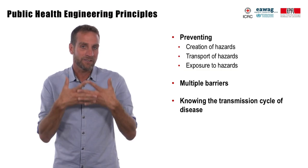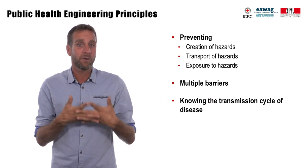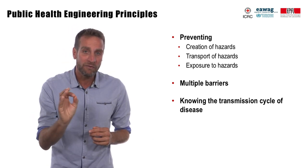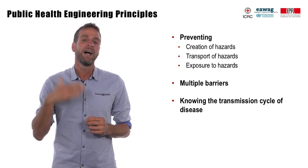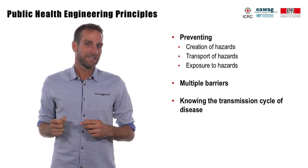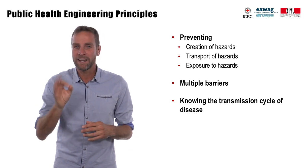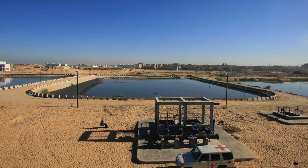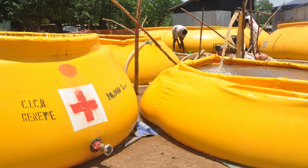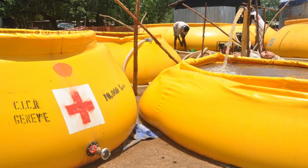Public health engineering relies on the concept that certain hazards — be they infectious pathogens or chemicals — move through the environment and cause harm to humans. Therefore, public health engineering measures focus on preventing the creation of hazards, their transport, and preventing people from being exposed to them. In the case of human waste, for instance, we cannot avoid its creation. But the public health engineer can reduce the spread of human waste in the environment by setting up a proper sanitation system. They can also treat water and promote proper food hygiene practices to reduce the exposure of people to pathogens contained in contaminated food or water.